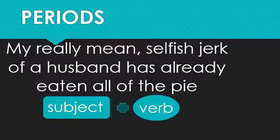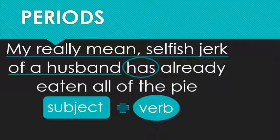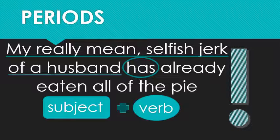Okay. How about this one? My really mean, selfish jerk of a husband has already eaten all of the pie. Sad but true. Is this a sentence? Well, is there a subject? Yes. It's a long subject. My really mean, selfish jerk of a husband. My verb has. Now, it needs to be complete. Has what? Has eaten. Has eaten what? Pie. The verb is complete. I've got a subject. This is a sentence. Actually, you could even say it's an exclamation. He ate all the pie.